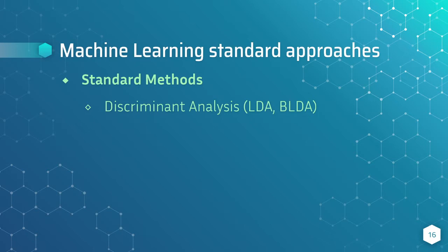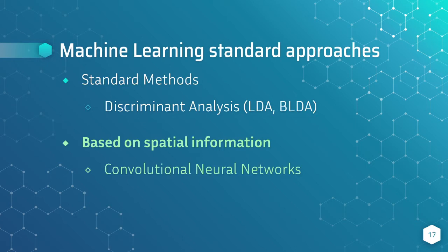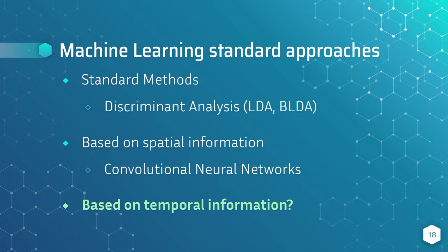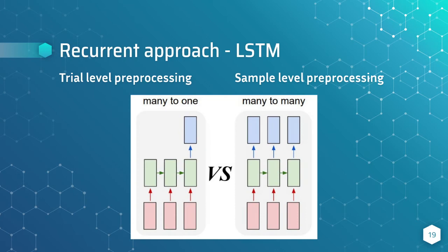The standard approaches to solve this problem are based on discriminant analysis. Hoffman uses the Bayesian linear discriminant analysis, and is the one with which we want to compare our results. There exist some other works that are based on retrieving and processing the spatial information of the electrodes by using two-dimensional convolutional neural networks. However, there are very few works based on the processing of temporal information, so we propose to use a long-short-term memory network to process the EEG as a time series.